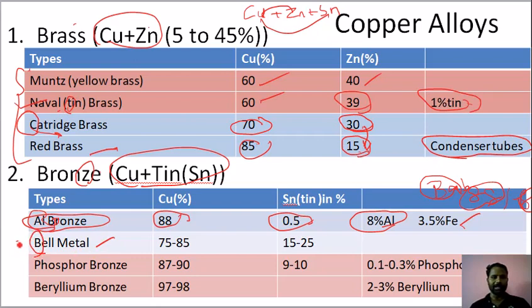What is bell metal? B — it's 88. So we have around 80% copper. This is an approximate value. Remaining 20% is tin.